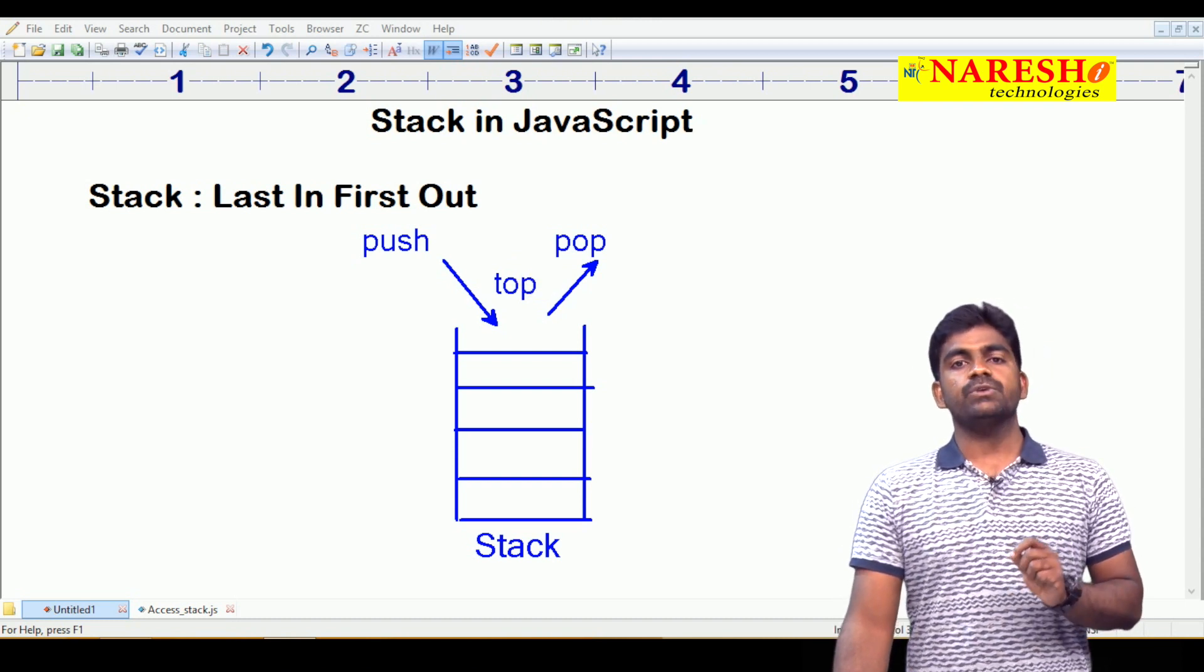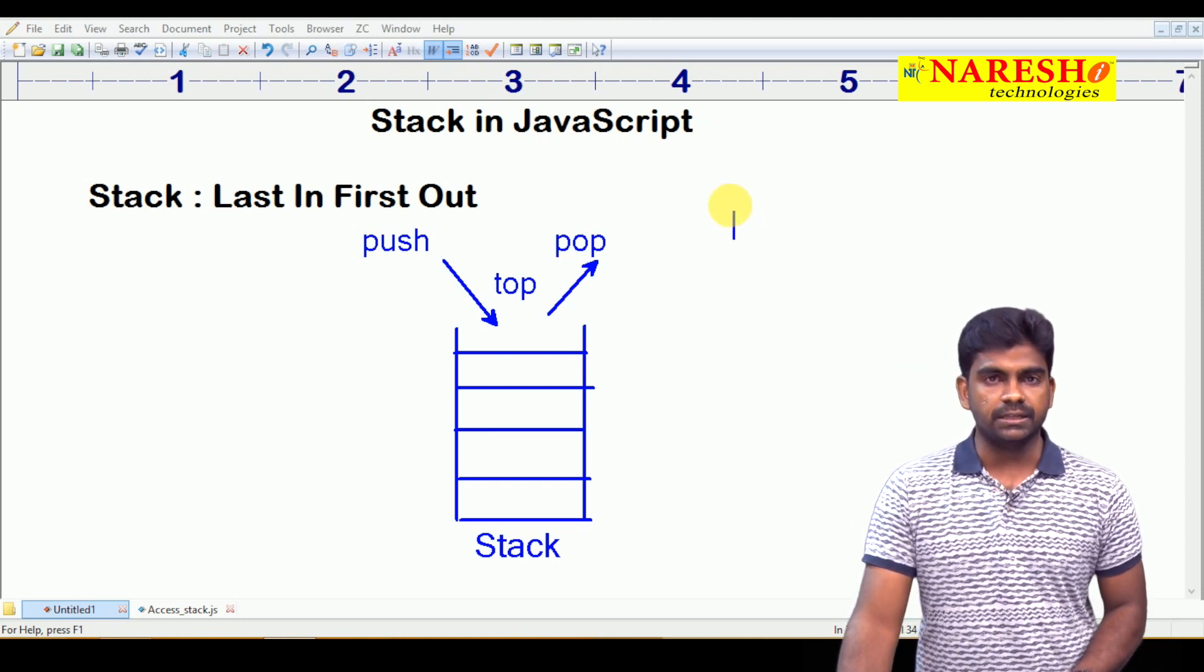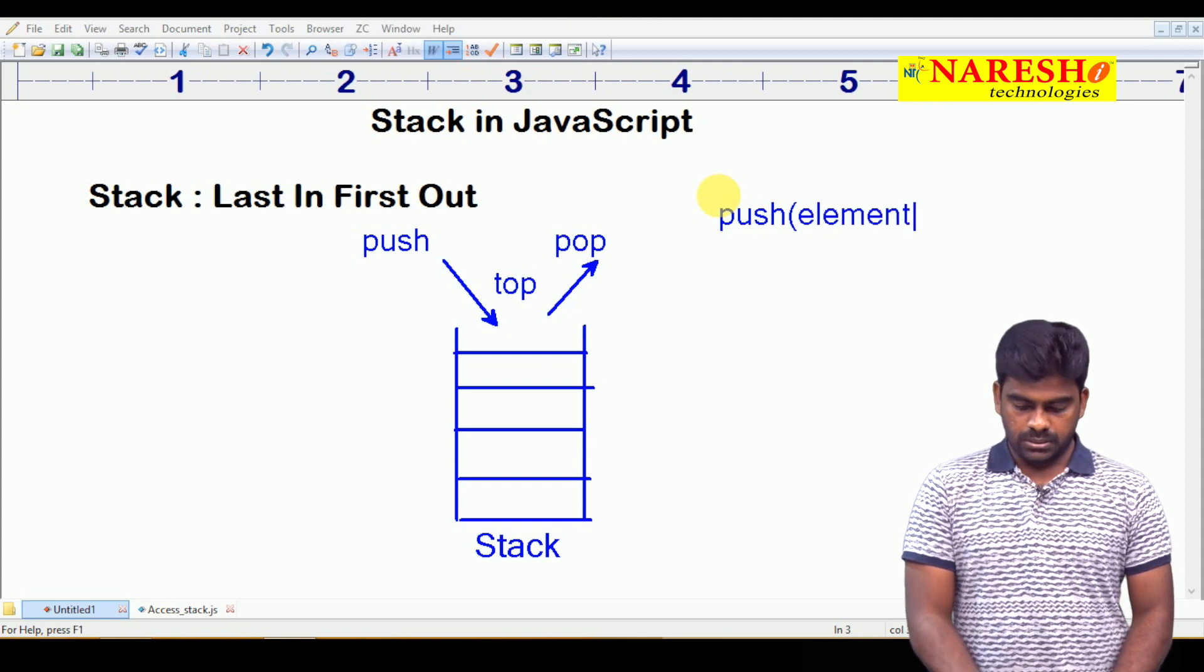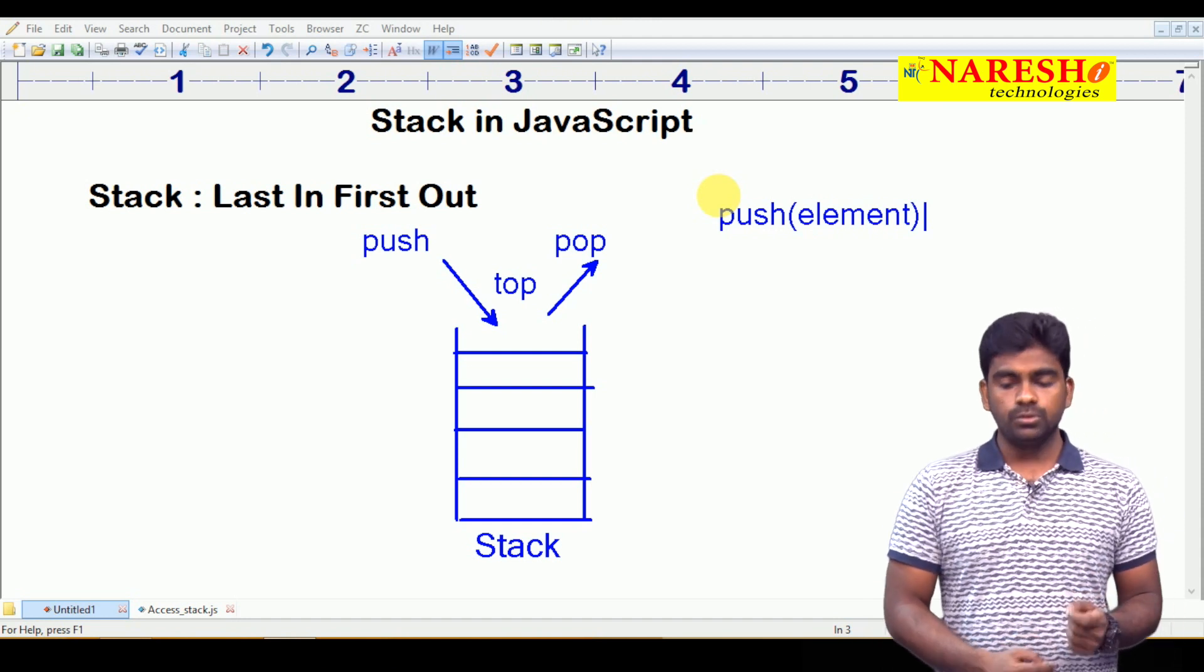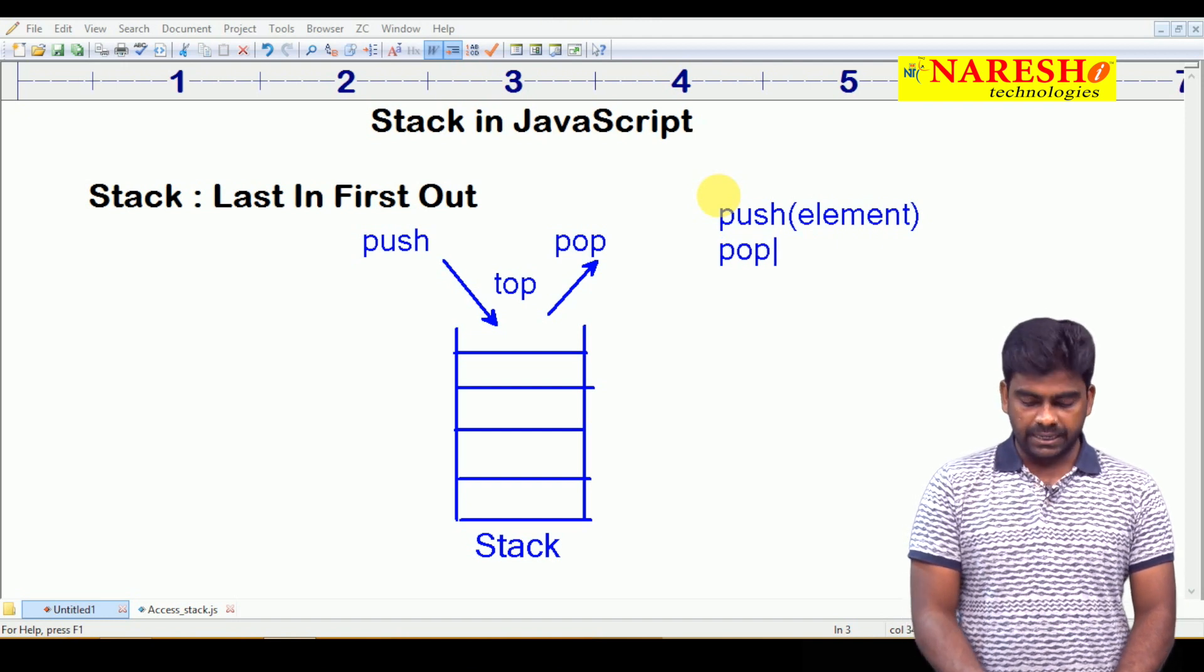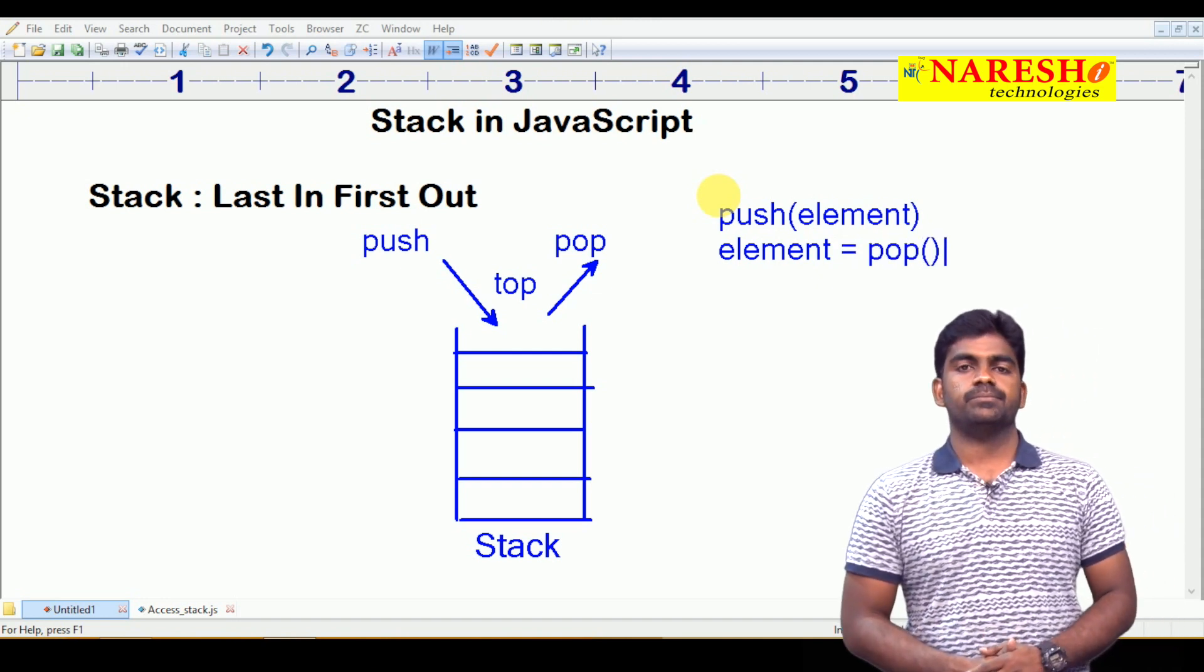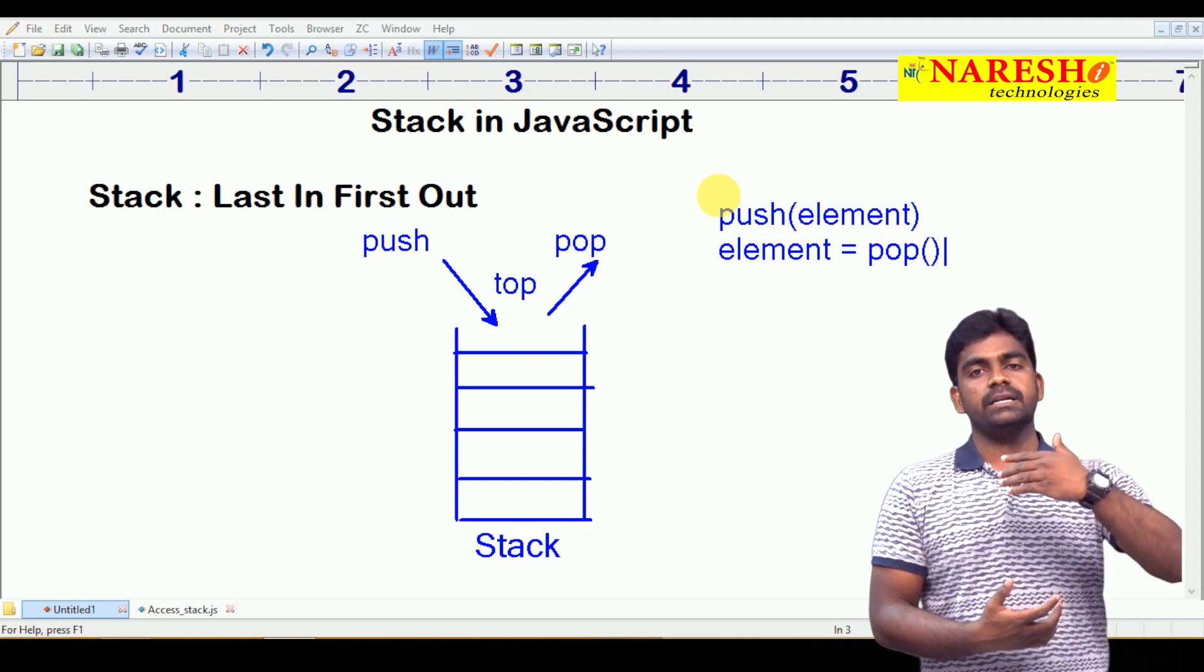What are all the operations we can perform on the stack? According to algorithm, one is push. Whatever the element you want to push, we have to specify as an input to push the element. Second one is pop. We are collecting it, it will return the element. Pop function will return the element, which element? The top element it will return.